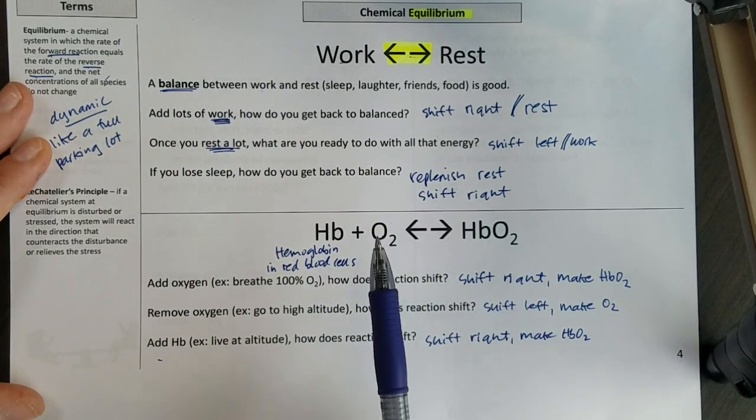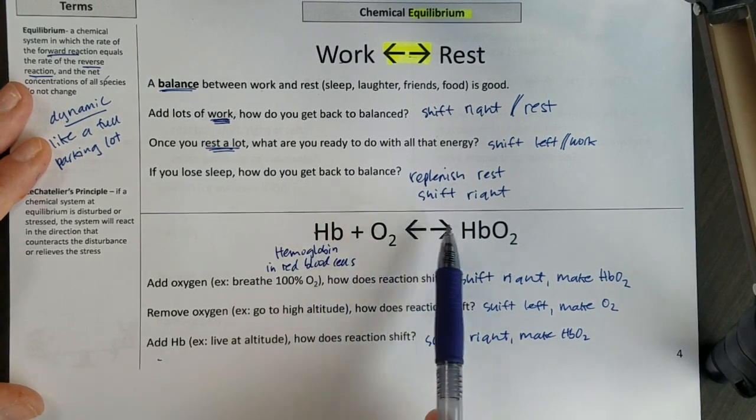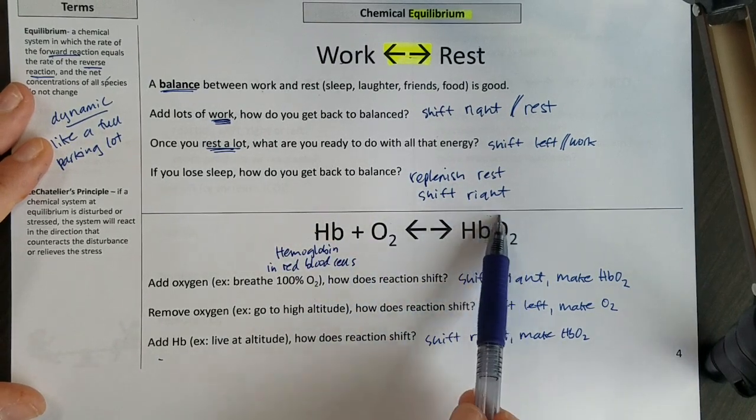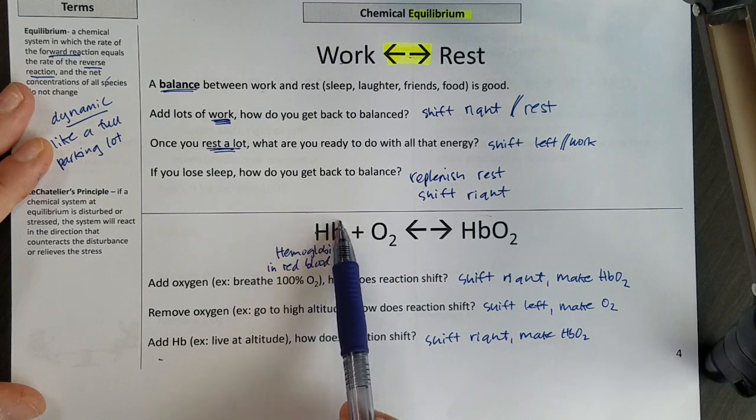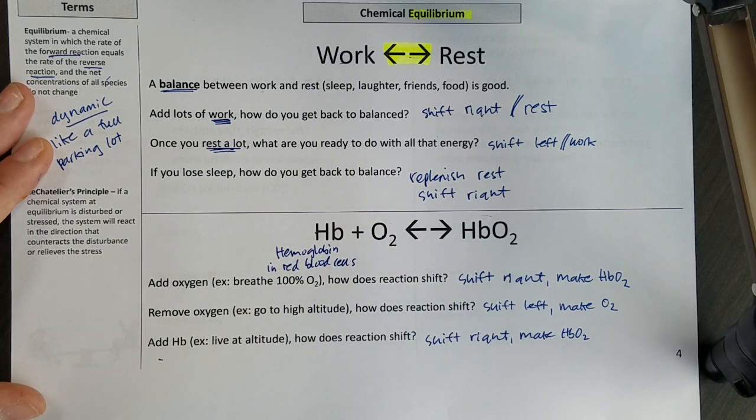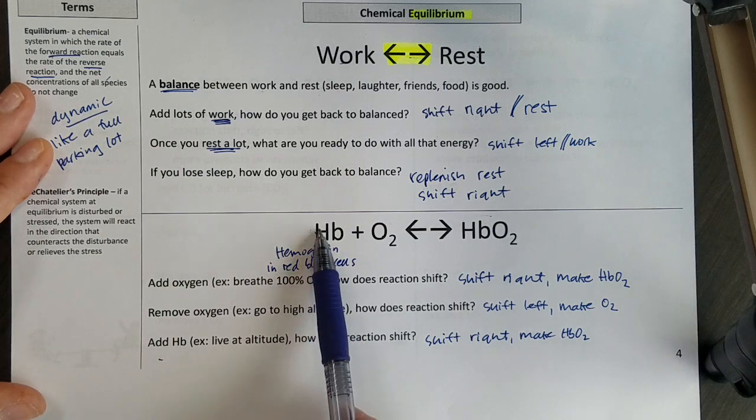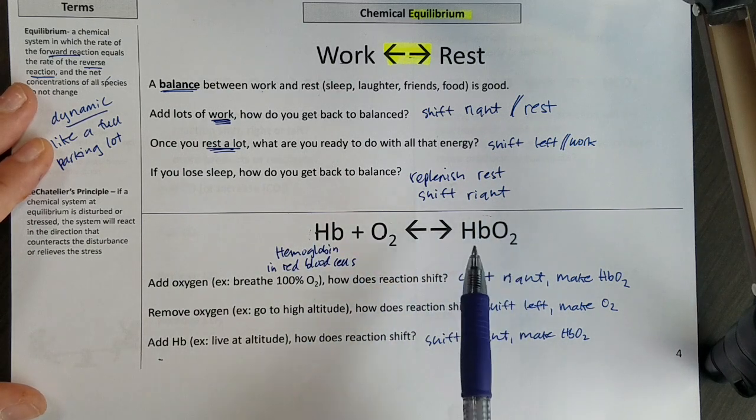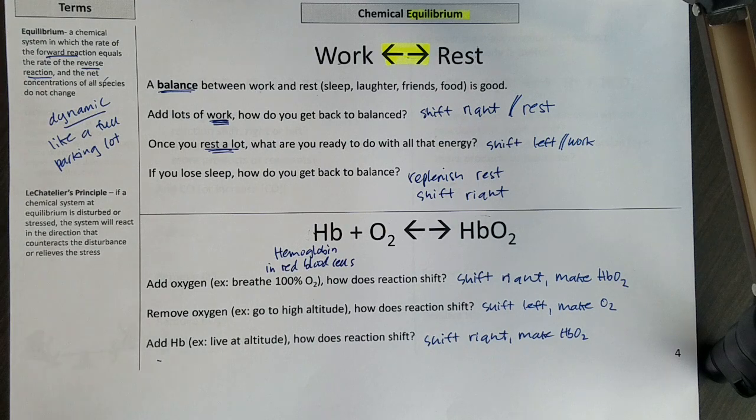When you live at altitude, you want more hemoglobin because this is how I carry oxygen around. And if you don't have enough hemoglobin, you can't carry oxygen around and you end up feeling dizzy, tired, out of breath. So once you have more hemoglobin, you're able to carry more oxygen around in your blood and you don't feel quite so affected by the altitude.